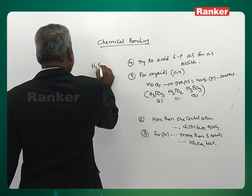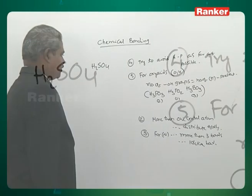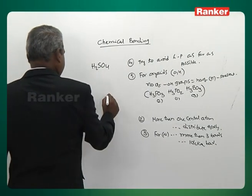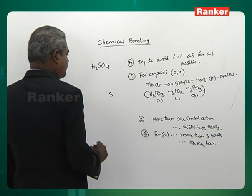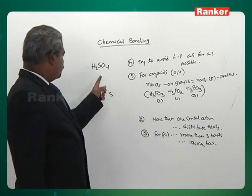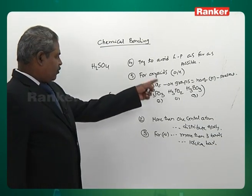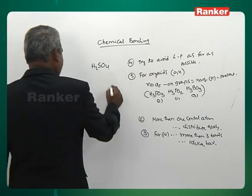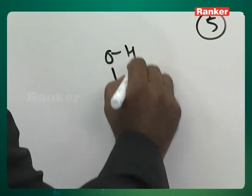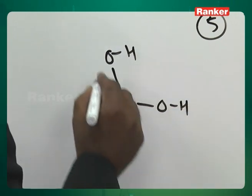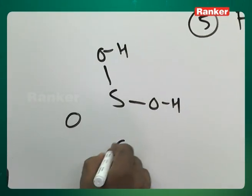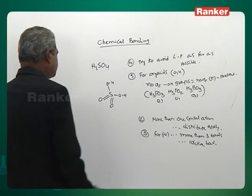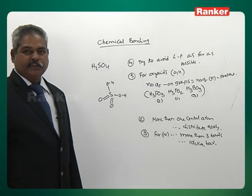H2SO4: sulfur is the central atom with two hydrogens. Number of OH groups equals number of hydrogens, so draw two OH groups. What is left? Two oxygens that form two bonds each. That is the structure of H2SO4 — as simple as that.